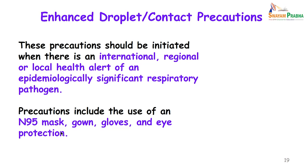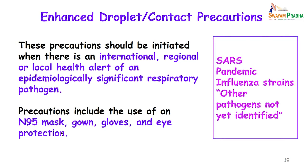To enhance droplet precautions, these should be initiated when there is an international, regional, or local health alert of an epidemiologically significant respiratory pathogen. Precautions include using an N95 mask, gowns, gloves and eye protection. These are done when expecting organisms like SARS, pandemic influenza strains, or other pathogens not yet identified.